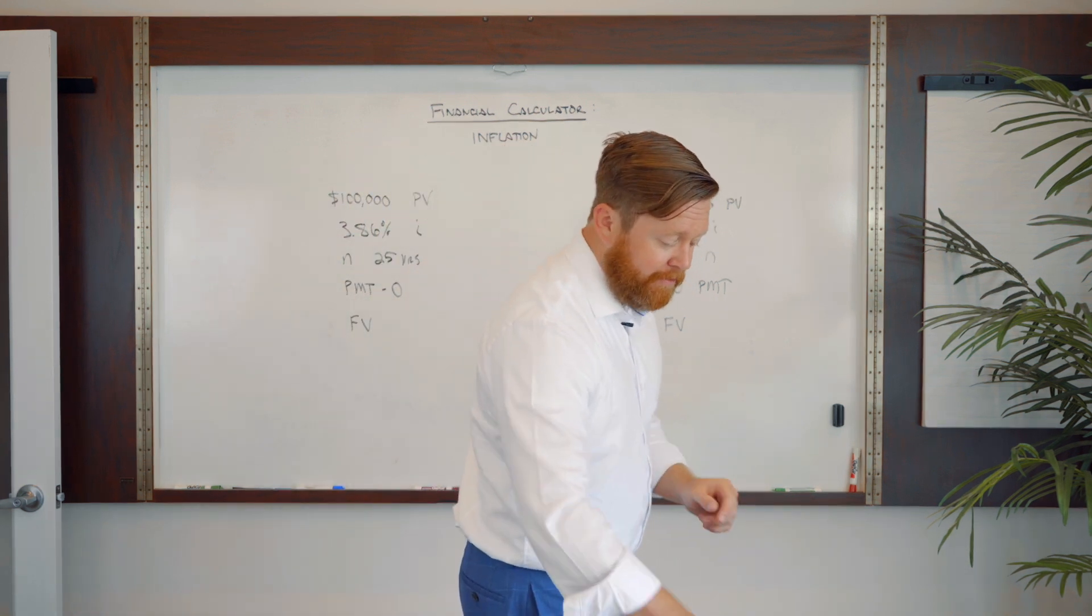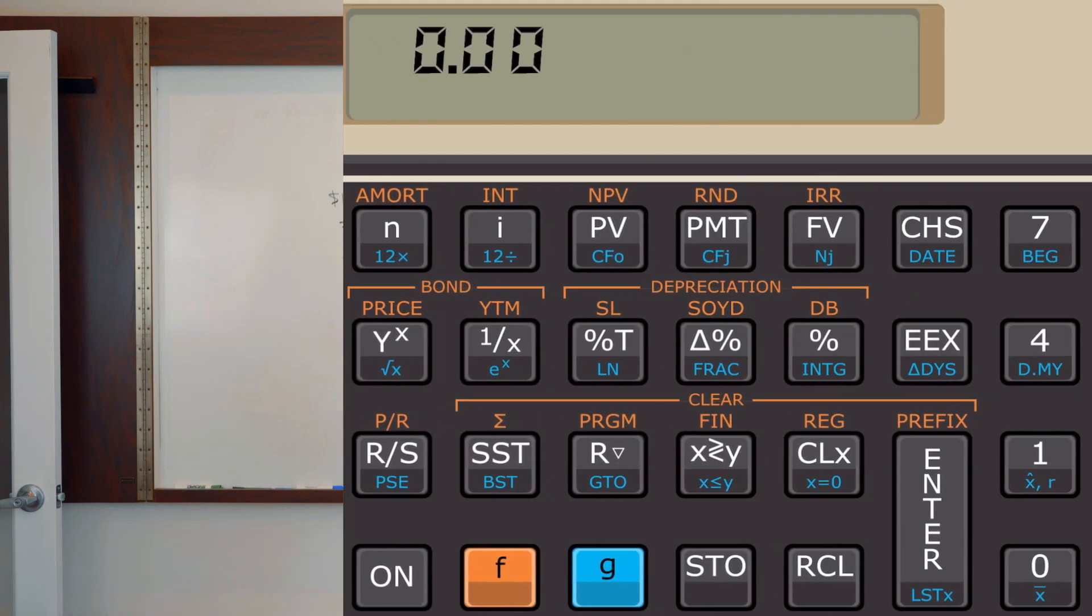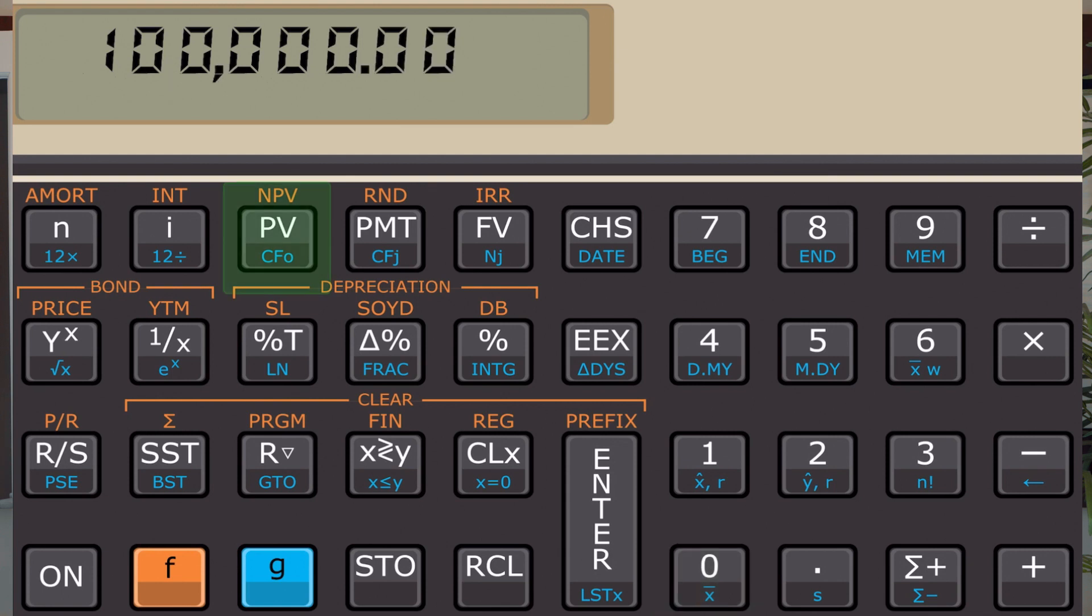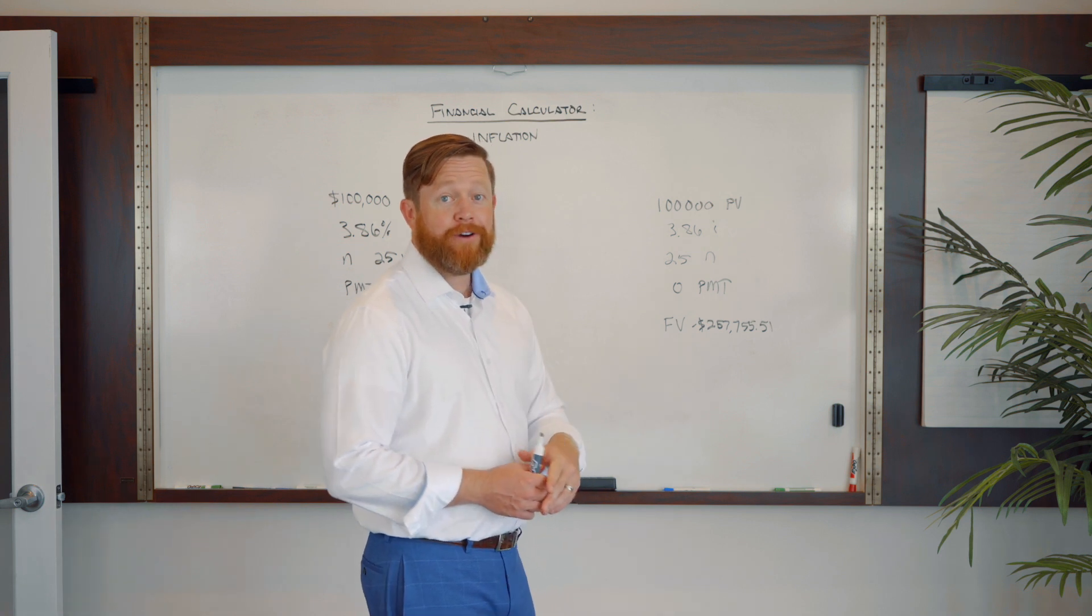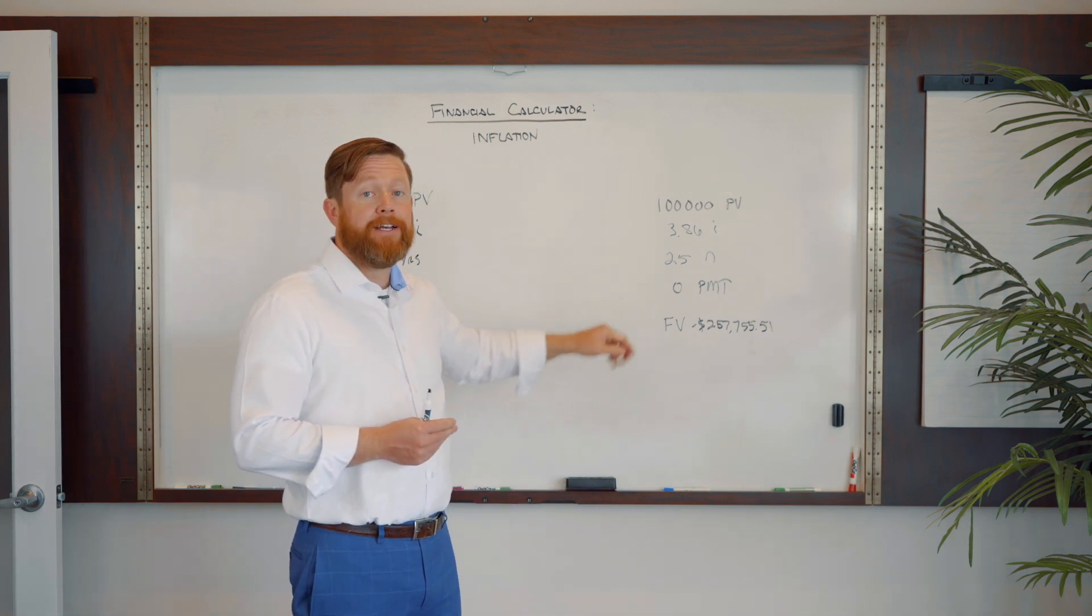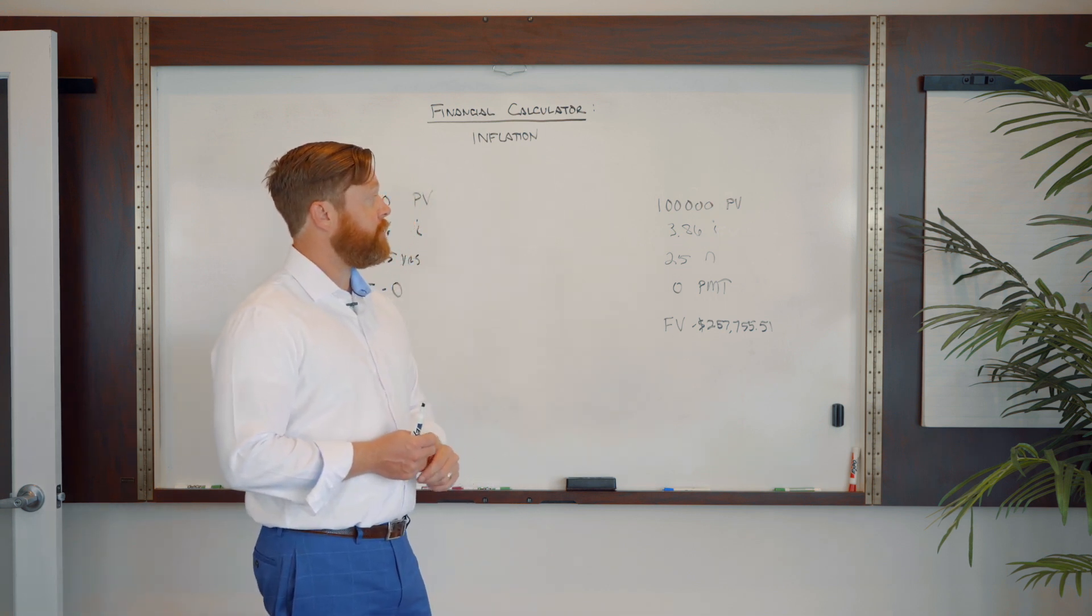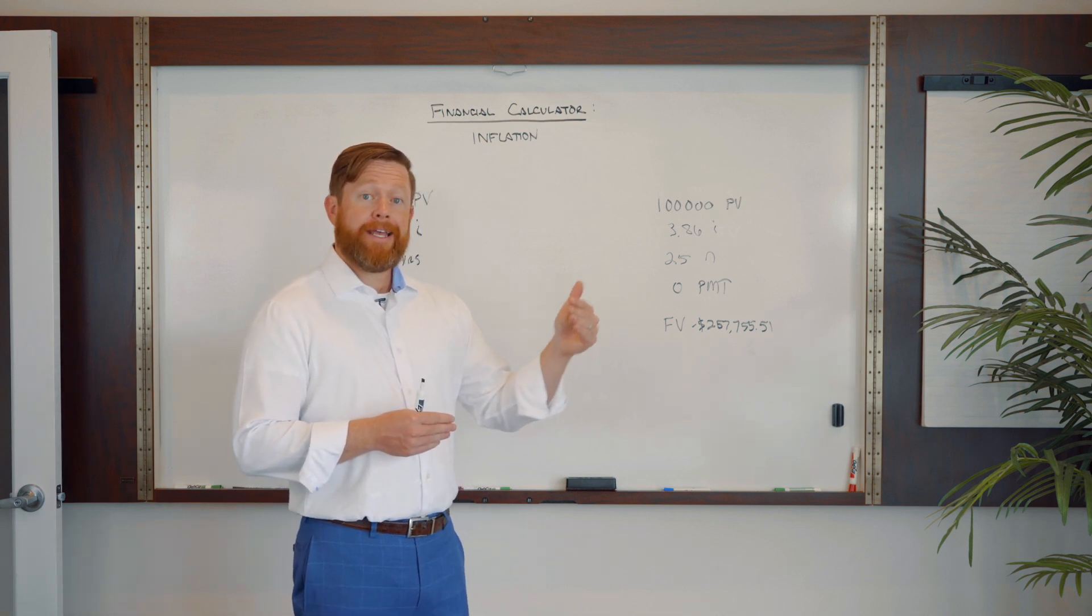So I'm going to use the Apple phone here again, and our free app that you can follow along on. So 100000 is our present value. Then we're going to use our 3.86 interest rate, and we're going to do this for 25 years. We're not putting any more payments into it. So then we hit future value and we can see now that our future value of our hundred thousand dollars in today's income is going to be $257,755.51. So that is a very sizable gain for the same lifestyle that you would have today at a hundred thousand. It's going to take almost 260,000, 25 years from now.